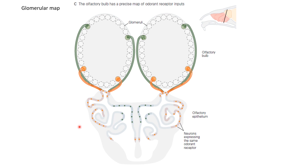There are millions of olfactory sensory neurons present in the olfactory epithelium, and each expresses one of the several hundred types of olfactory receptors. Each type of receptor would therefore be expressed in thousands of neurons at different locations within the epithelium. Here we are looking at a schematic of the mouse olfactory system — for example, orange represents one type of receptor and green another, present at different regions. The right olfactory bulb is connected to the right nose and the left olfactory bulb to the left nose.